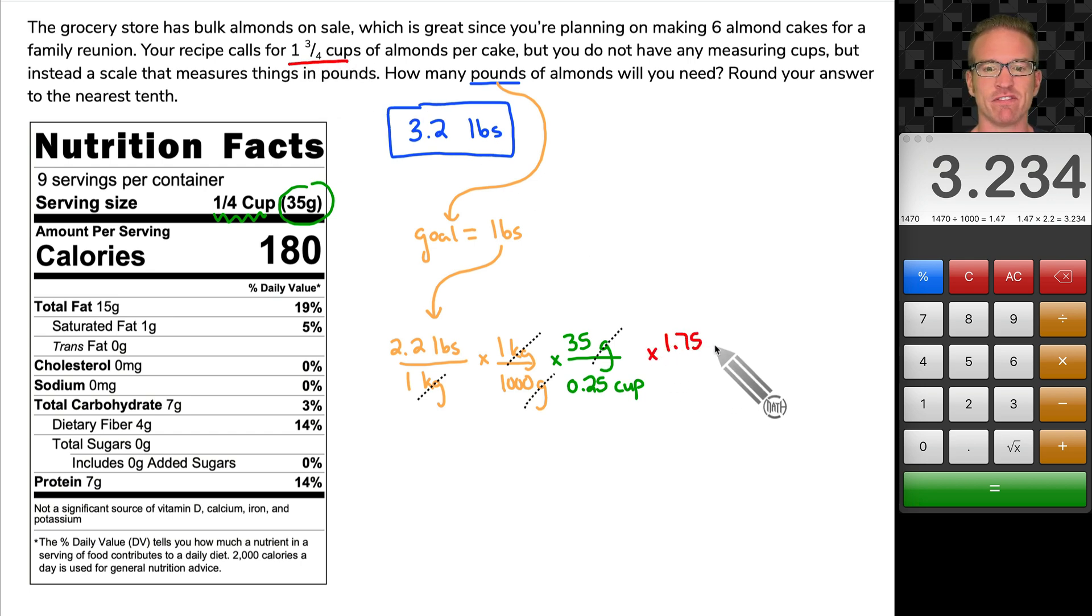Well, recall one and three fourth cups. Do you remember that decimal? 1.75 cups. Notice where I'm putting the cups at. I'm putting it at the top. 1.75 cups. What does that do? That will make one cake. That is what the recipe calls for. 1.75 cups of almonds per cake. That means one cake. Our cups cancel out.